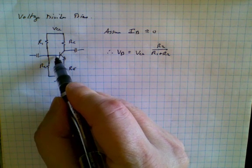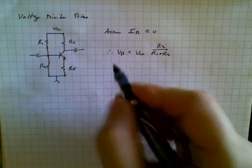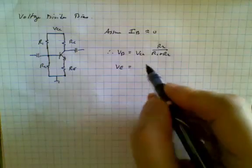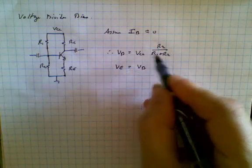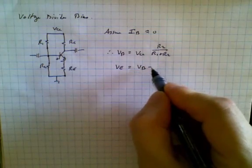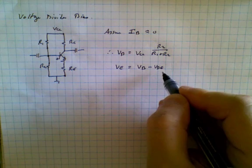Since we know the voltage at the base, it's relatively easy to find the voltage at the emitter. Voltage at the emitter is equal to voltage at the base, which we've already figured out, minus VBE, which is about 0.7 volts.